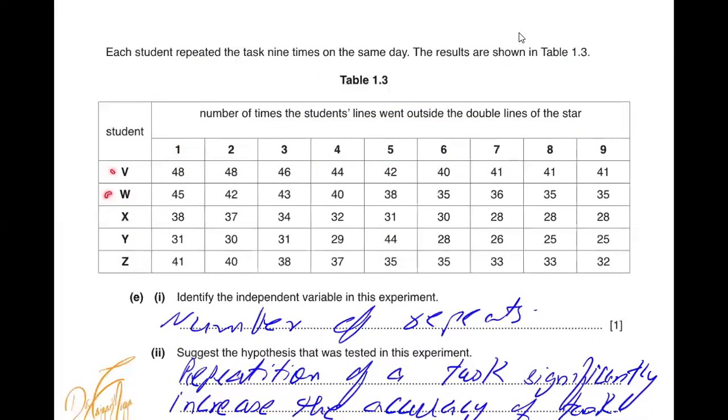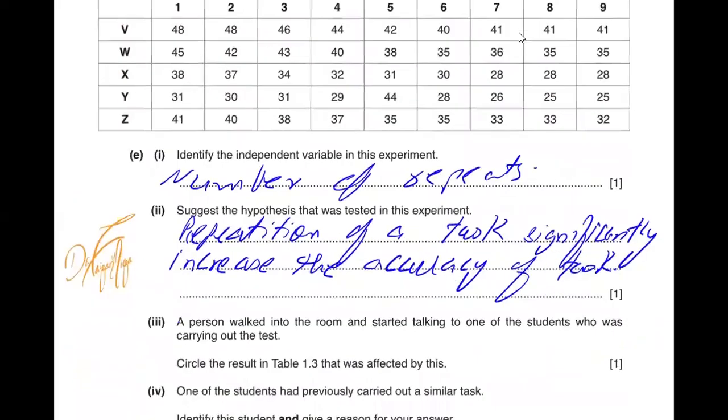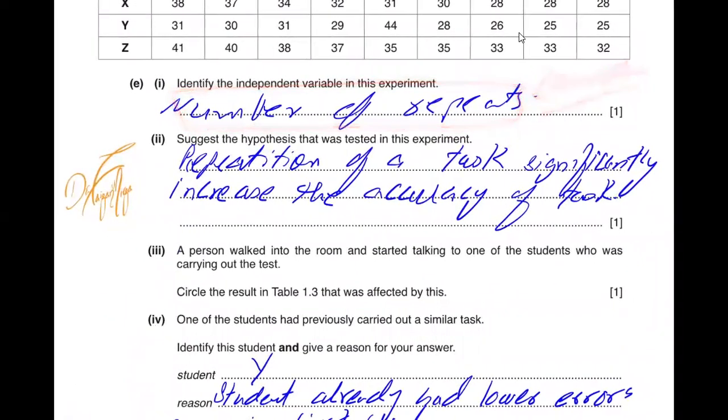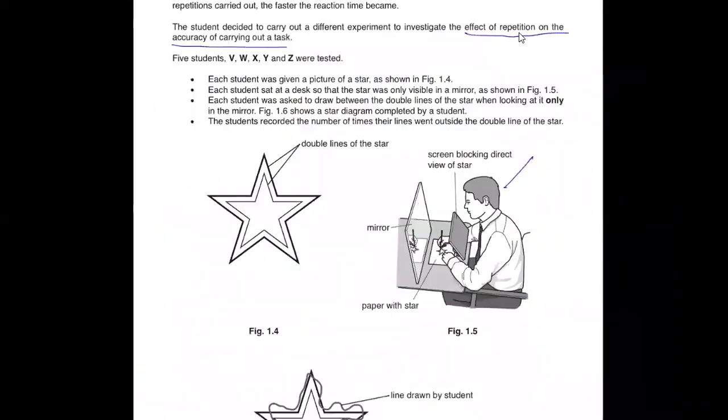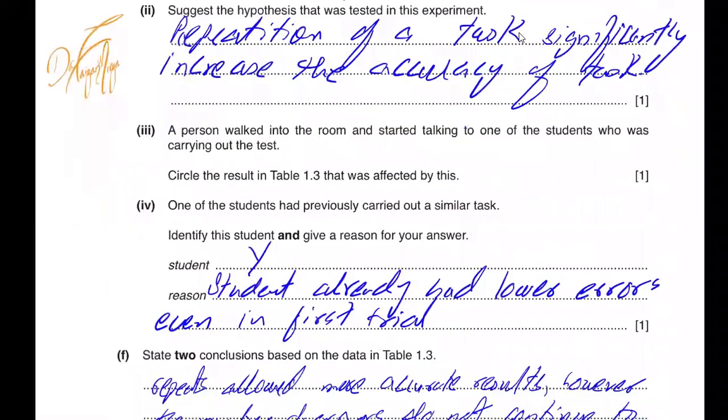Figure 1.6 shows the star diagram completed by a student. The student recorded the number of times their lines went outside the double lines of the star. Every time the line went out it was counted as an error and this was repeated many times to see how many errors are being carried out continuously by the students. Each student repeated the task nine times. The results are shown in table 1.3. There are five students who are appearing in this investigation. You can see student v ended up with 48 errors then 48 errors, 46, 44 - the errors decreased upon repetition. W again as it progressed the task was done better. It stood good for almost every subject.